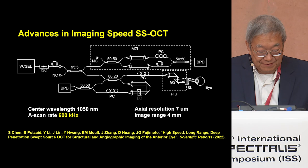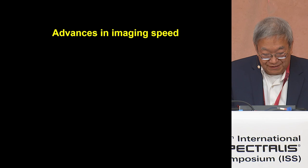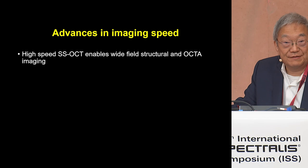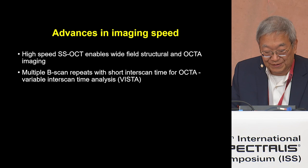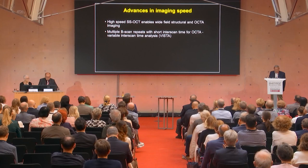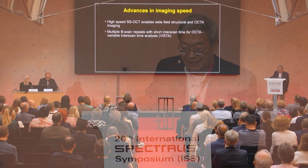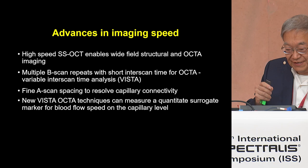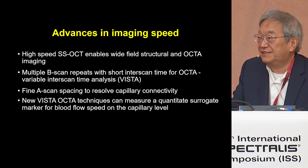The system is a prototype with a 600 kilohertz scan rate and 7 micron axial resolution. With high speed, we can do wide-field structural OCT and angiographic imaging. For OCT angiography, we can do multiple B-scans with very short inter-scan time. This allows variable inter-scan time analysis with fine A-scan spacing necessary to resolve connectivity on the capillary level. We can then do next-generation variable inter-scan time analysis, which can extract a quantitative marker for blood flow speeds on the capillary level.